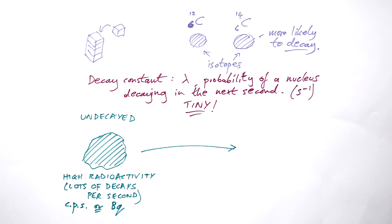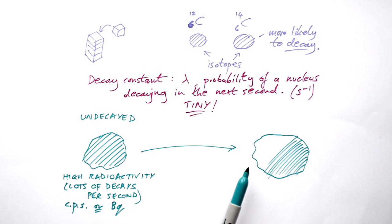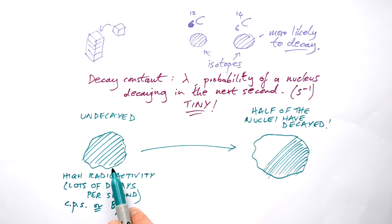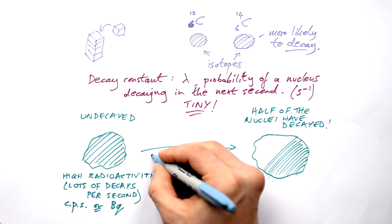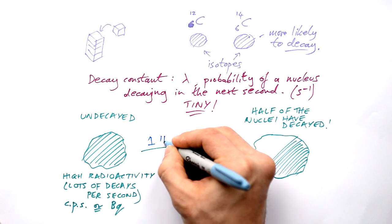But after a certain amount of time, half of the radioactive material in this rock has decayed. So that means we only have half of the undecayed nuclei left compared to what we started with. We call this amount of time one half-life.